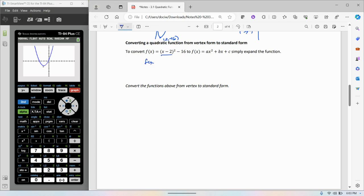Don't forget that x minus 2 squared means that we have x minus 2 times x minus 2. So we have x squared minus 2x minus 2x is minus 4x. Negative 2 times negative 2 is plus 4, and then minus 16. We can combine the 4 and the negative 16. So f of x is equal to x squared minus 4x minus 12.